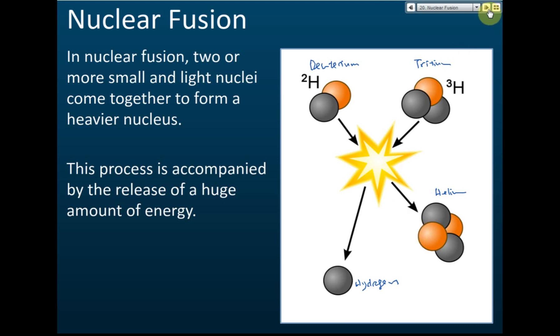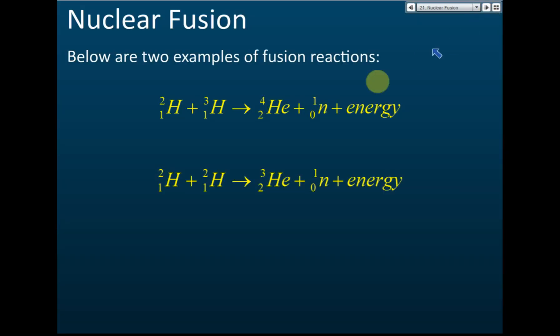These are examples of nuclear fusions. Deuterium with tritium produces a helium, or deuterium with deuterium produces another helium with three neutrons. These are examples of nuclear fusion, and you don't need to memorize this formula or equation.